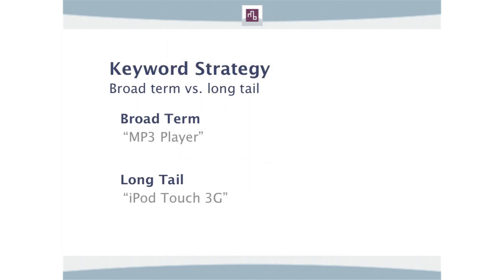In terms of keywords, we typically break them down into two big categories: broad-term keywords, which are typically pretty hard to place in search engine results — an example would be 'MP3 player' — versus long tail, which are much more specific, like 'iPod Touch 3G.' Folks searching for the iPod Touch 3G know what they want; they're already through the buying cycle, already in the conversion funnel. So we work really hard to define a long list of long tail keywords.